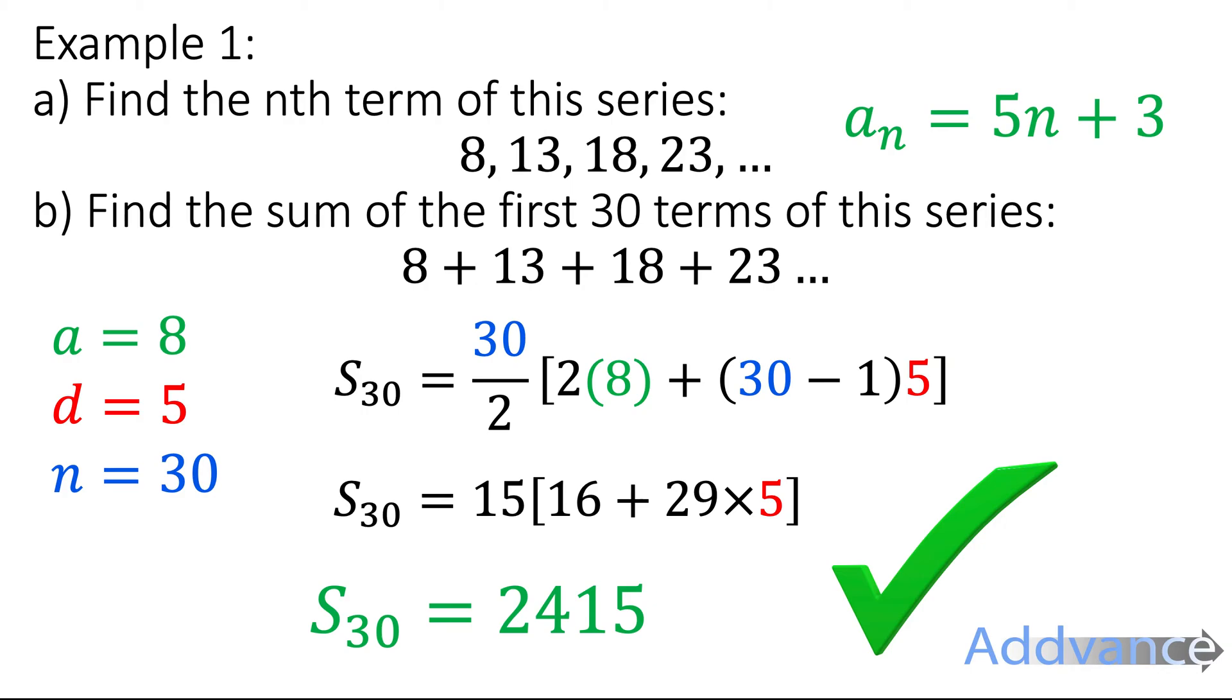So the first 30 terms of this series add up to be 2,415. That's far quicker than actually adding up each term step by step.